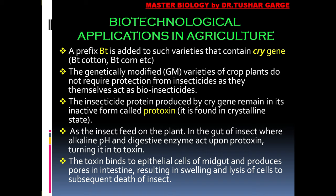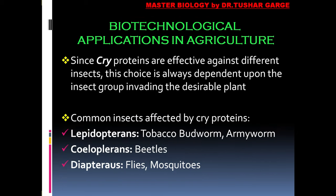Yeh GMO kisi bhi insecticide ka upyog karne mein kisaan ko majboor nahi karta — in crop plants ke dwara hi insecticides ka role bhi play hota hai, aur isliye in plants ko hum bio-insecticides keh sakte hain. Cry gene jo insecticide protein hai, wo apne inactive form mein — jise pro-toxin kehte hain — crystalline state mein paaya jaata hai. Jab koi insect aakar is plant par feed karna shuru karta hai, toh yeh pro-toxin uski gut mein pahunch jaata hai aur alkaline pH aur digestive enzymes ki presence mein pro-toxin activate hokar toxin mein convert ho jaata hai. Toxin insect ke mid-gut ki epithelial cell ke receptor se bind hota hai aur intestine mein pores develop karna shuru karta hai, jisse insect ki body mein swelling aa jaati hai aur woh dheere dheere maut ki taraf chala jaata hai. Yeh approach lepidopteran insects jaise tobacco budworm, armyworm; coleopterans jaise beetles; aur dipterans jaise flies aur mosquitoes mein zyada achha prabhav dikhata hai.